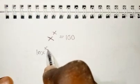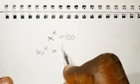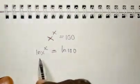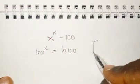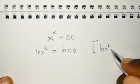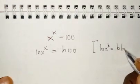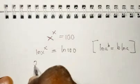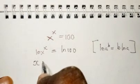So you have the natural log of x^x equals the natural log of 100. Recalling the property of logarithms which says the natural log of a^b equals b times the natural log of a.